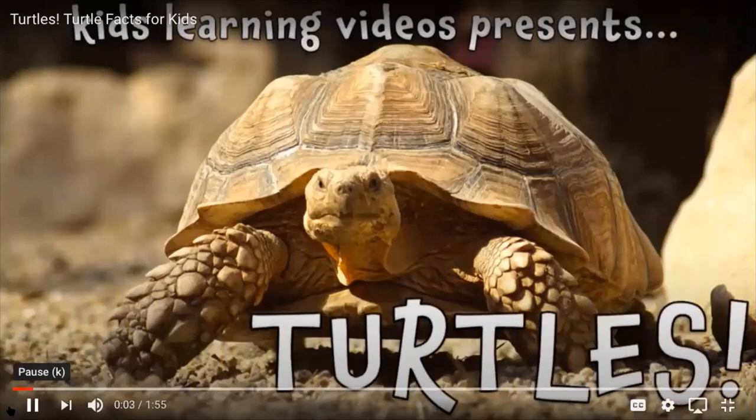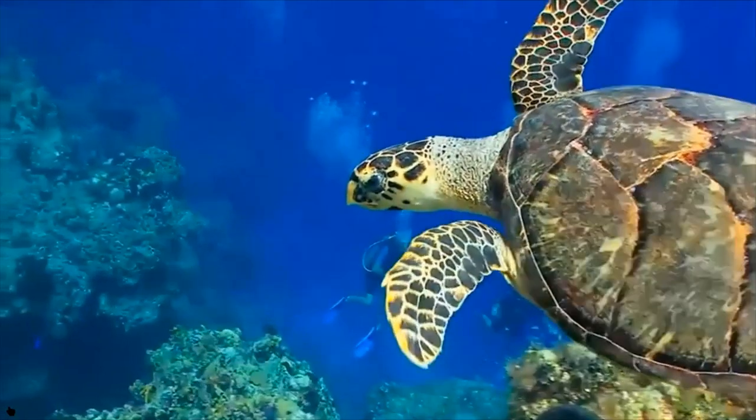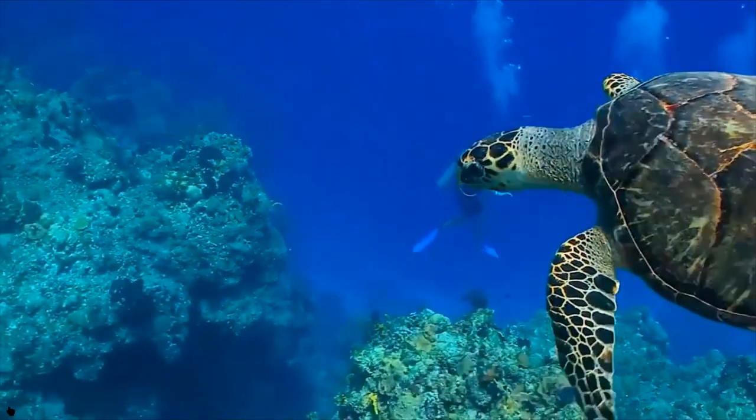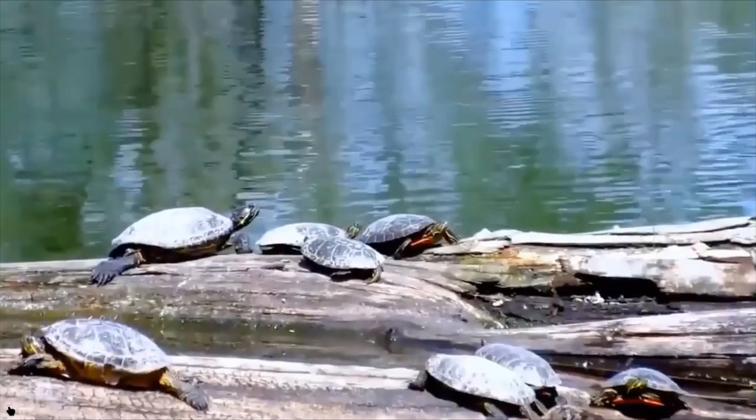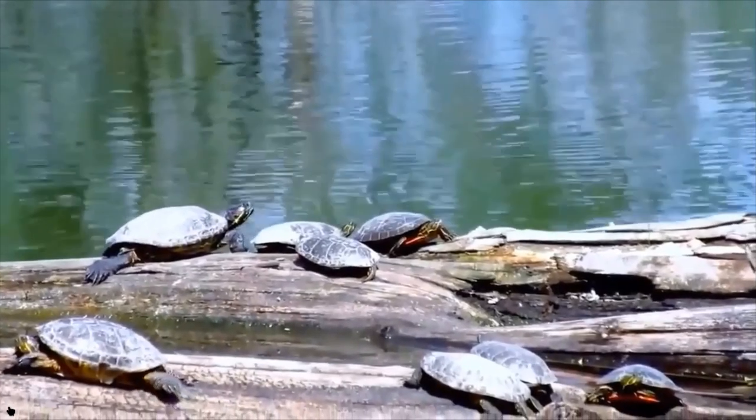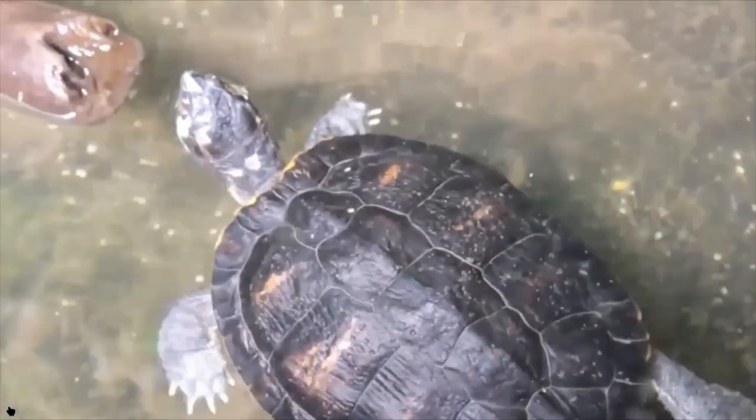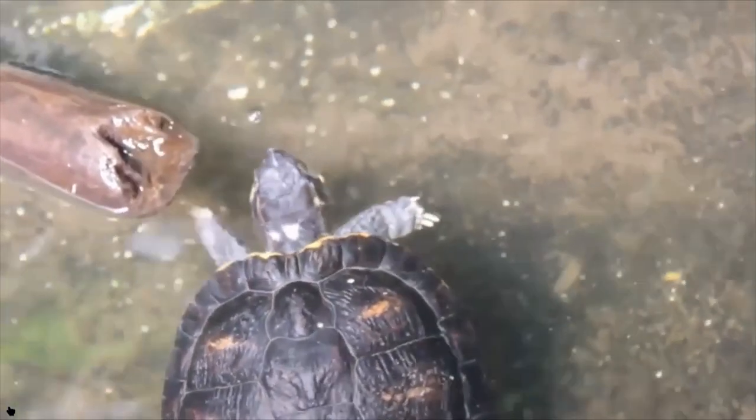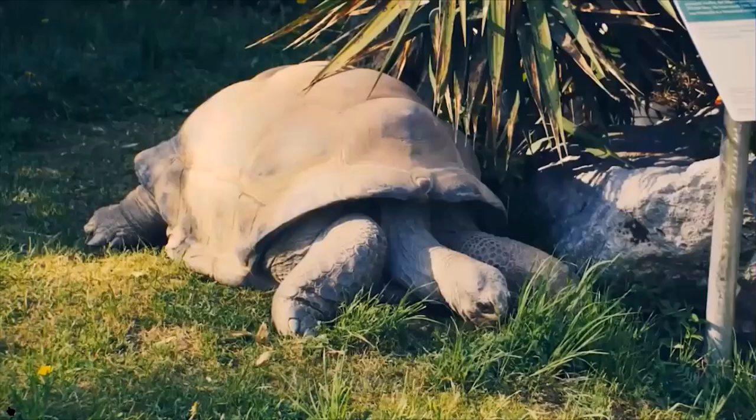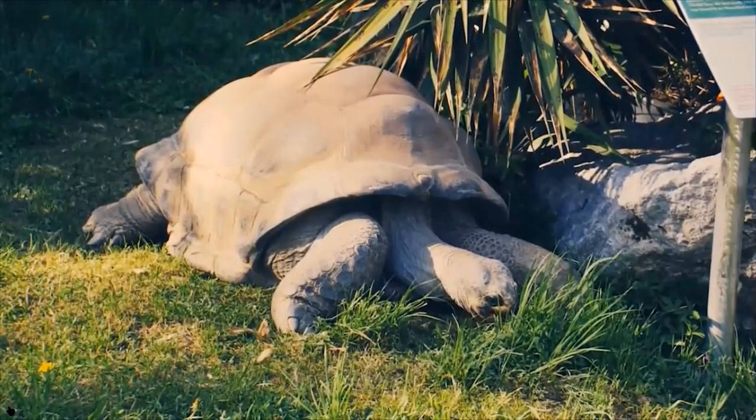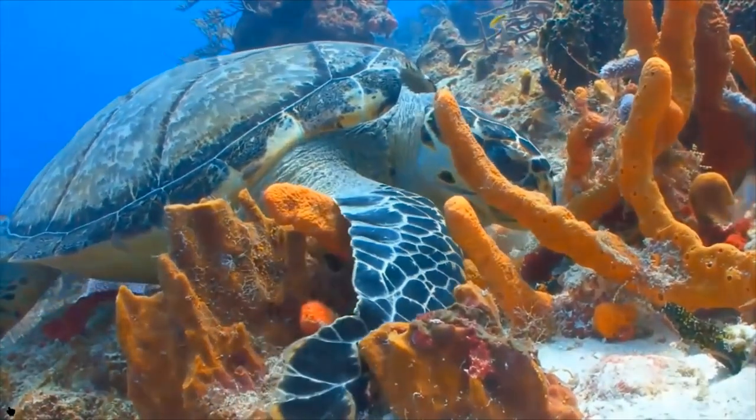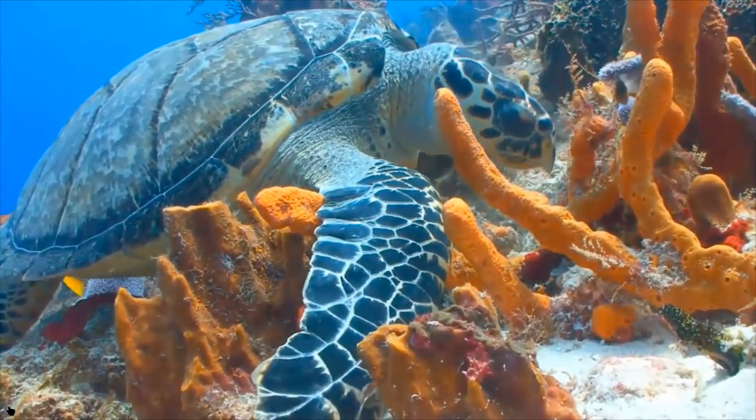Turtles. Turtles are some of the oldest reptiles. They've been on earth even longer than snakes and alligators. In fact, turtles have been around since the dinosaurs around 200 million years ago. There are lots of different kinds of turtles. Some like salt water, others like fresh water. Some are teeny tiny and some weigh hundreds of pounds. Some are carnivores, meaning they eat meat. While others are herbivores, meaning they eat plants. And some eat both, which makes them omnivores.